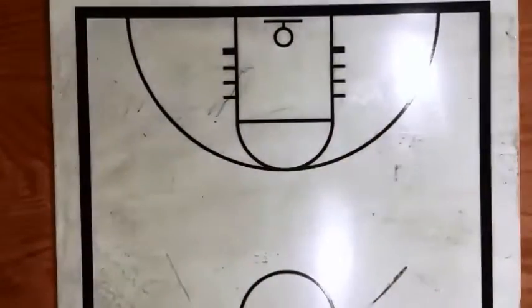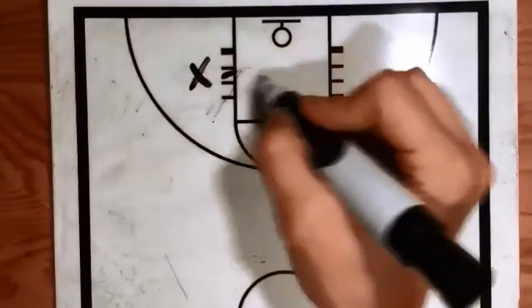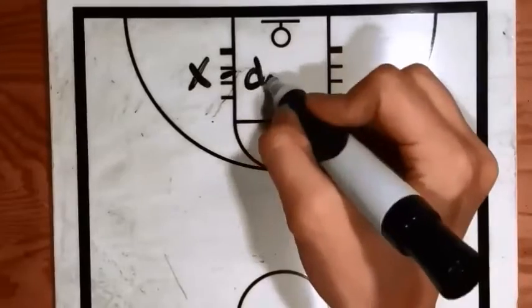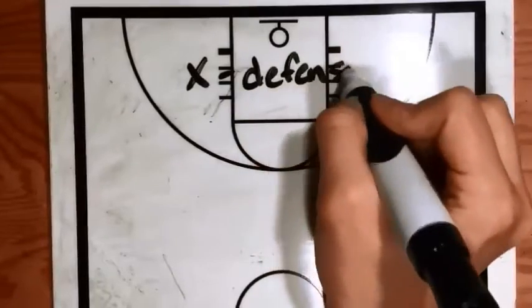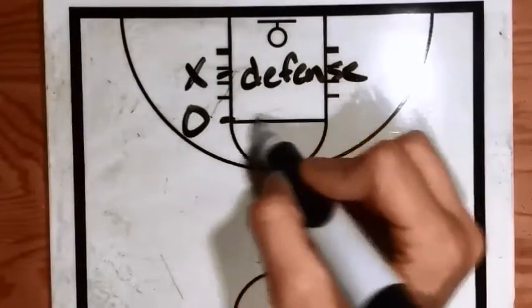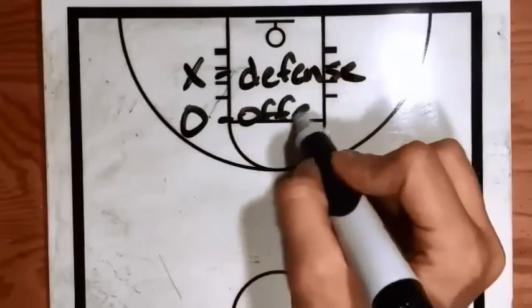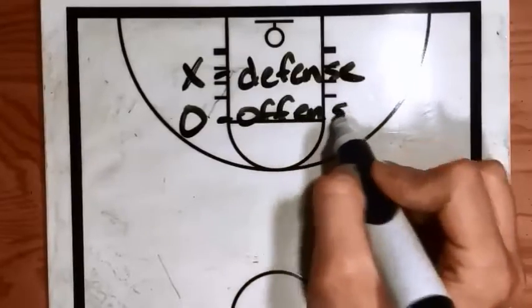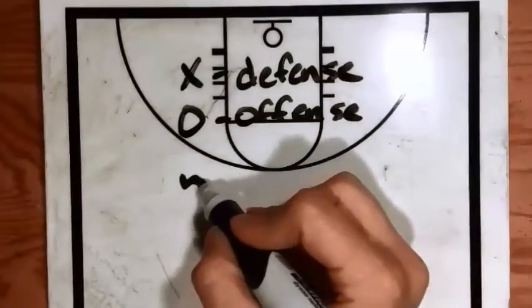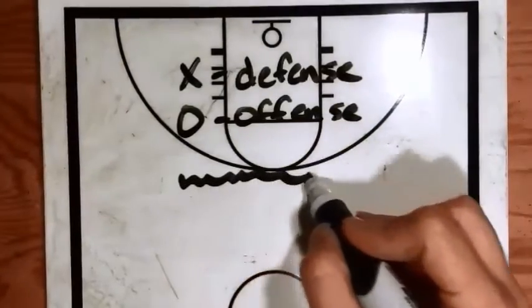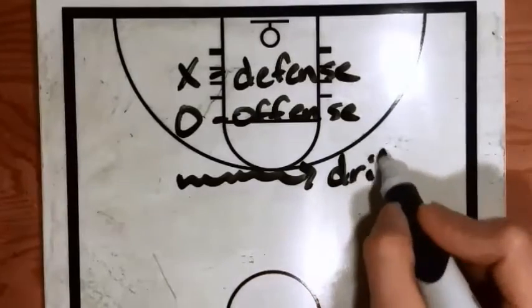So first of all, we're going to want to know what the symbols represent. X is defense, O stands for offense, and a squiggly line means dribble.